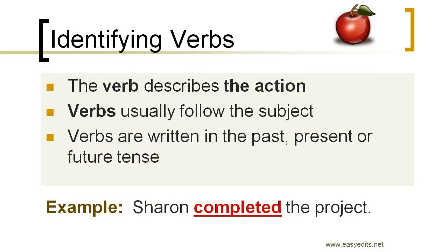Let's talk about identifying verbs. The verb describes the action or state of being of the subject. Verbs usually follow the subject and are written in the past or present tense. You can also put verb phrases together to indicate future tense. For example, in 'Sharon completed the project,' the action — the verb — is 'completed.'